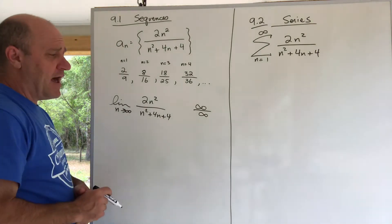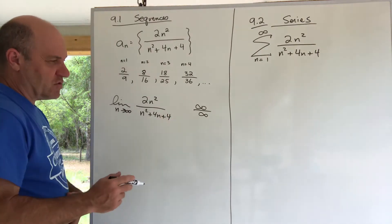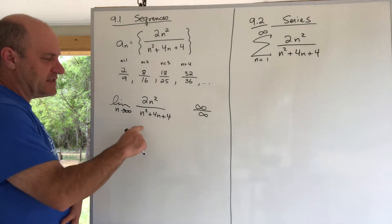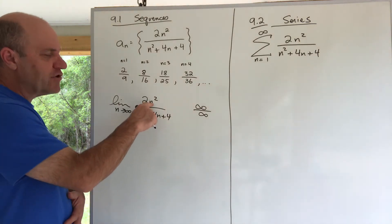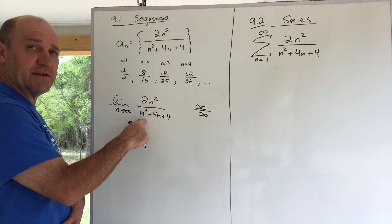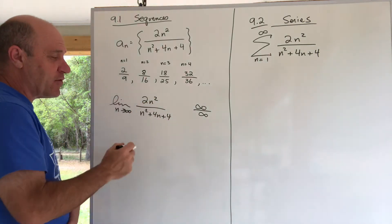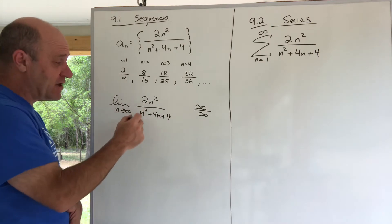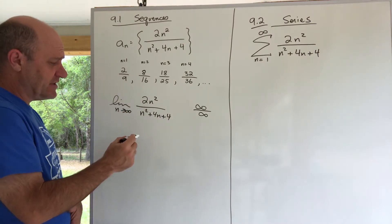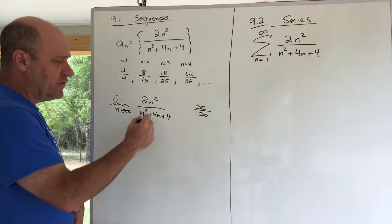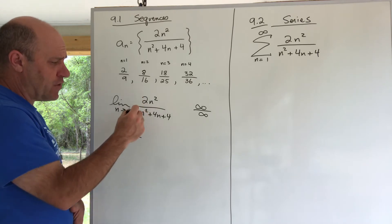But we also learned to sort of shortcut that a little bit. With the same degree in the numerator and same degree in the denominator, we know that they're kind of the same size infinities, and they are approaching the ratio of leading coefficients. So the answer to this limit is actually 2 - it's approaching 2 over 1, the ratio of leading coefficients.